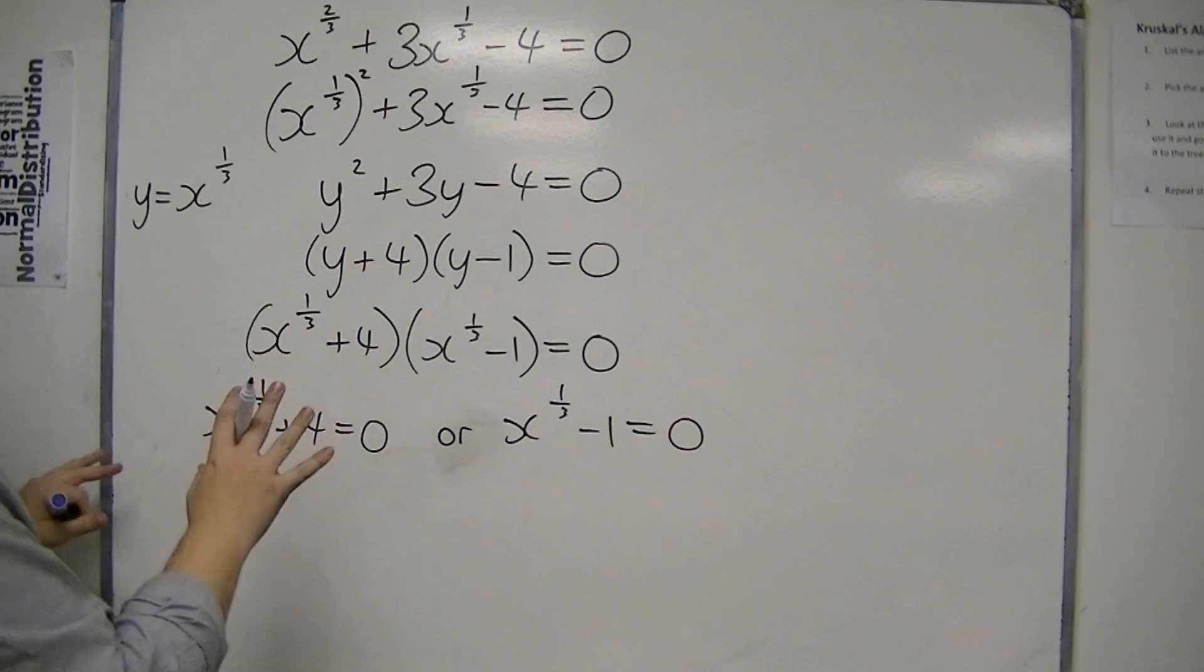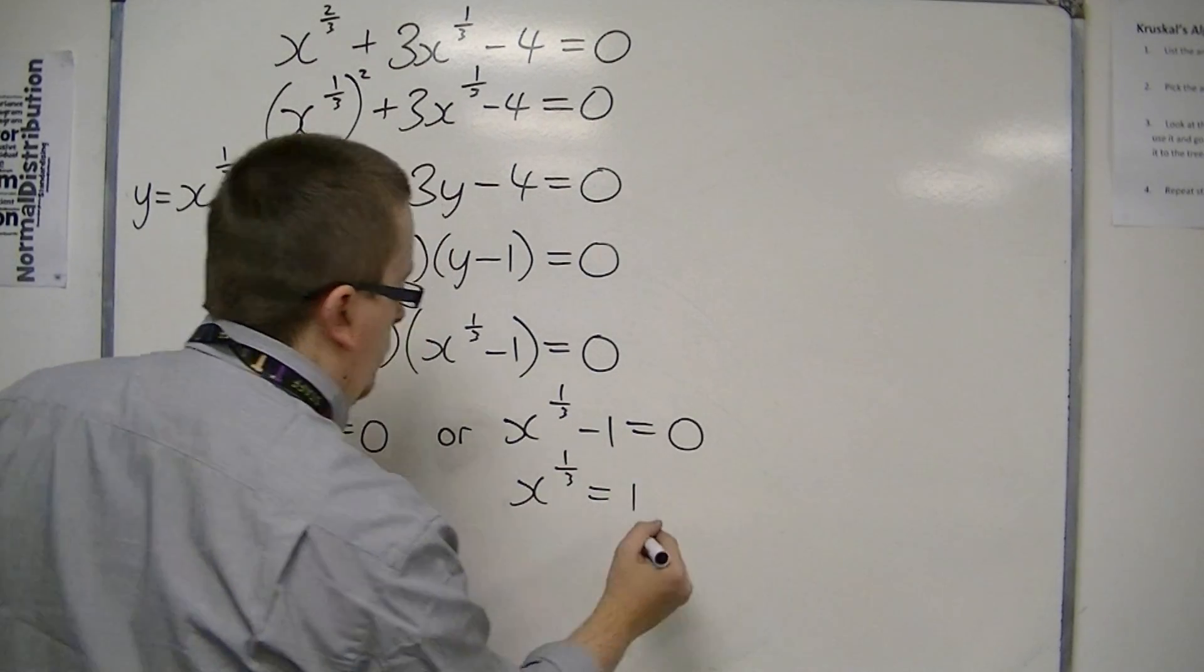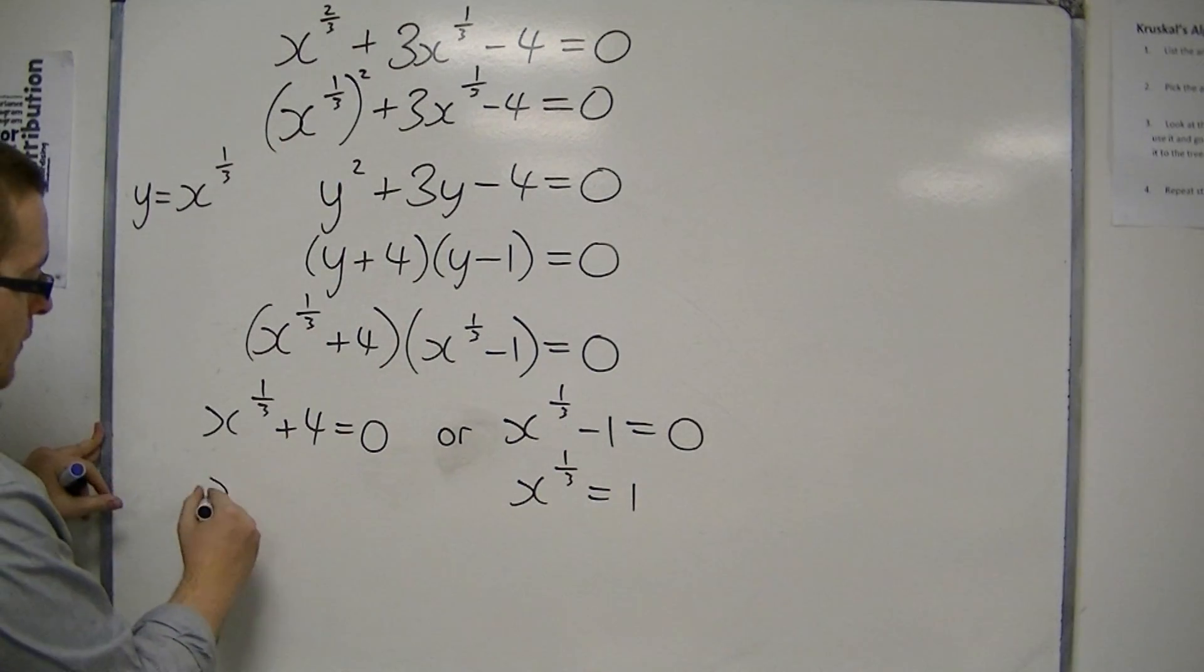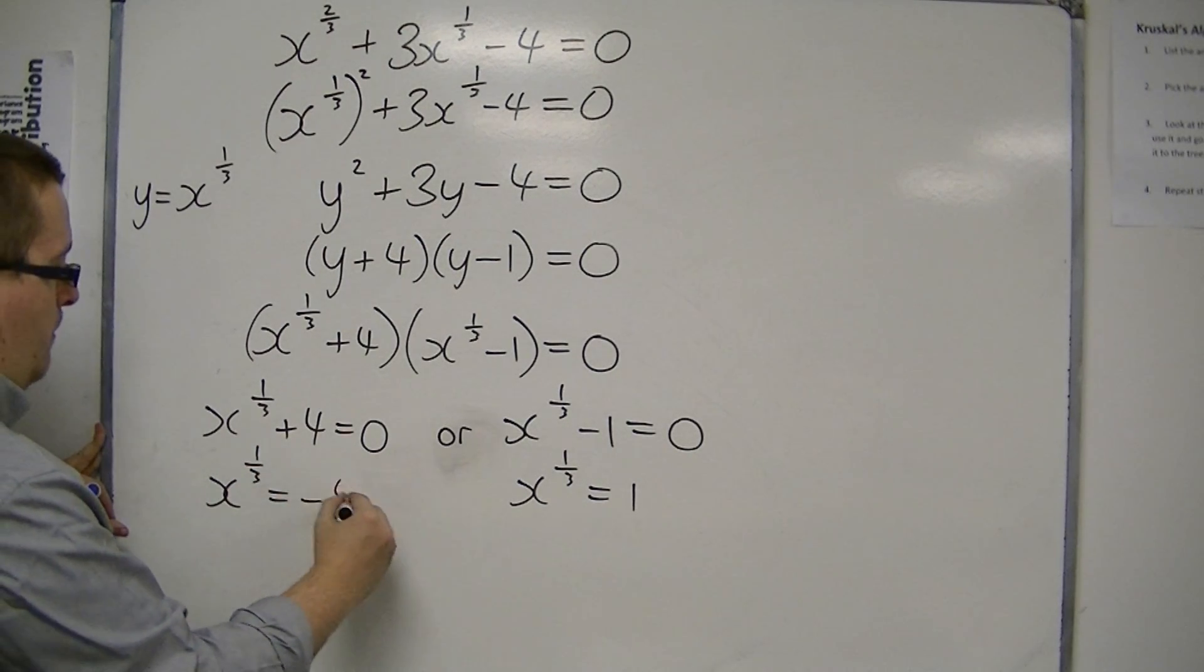Now, if you add 1 to both sides on this side, we get x to the 1 third is 1. Or, on this side, take 4 from both sides, x to the 1 third is minus 4.